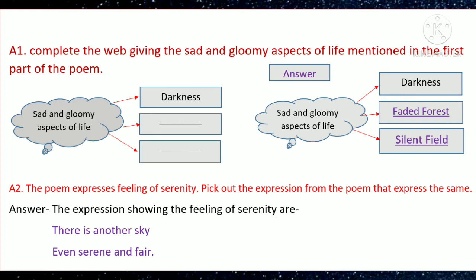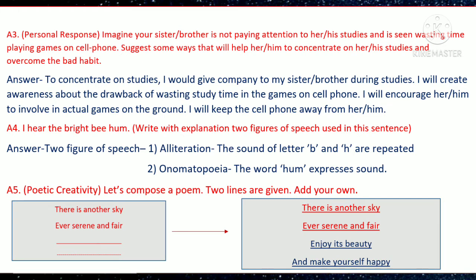Question A2: The poem expresses a feeling of serenity. Pick out the expressions from the poem that express the same. The expressions showing the feeling of serenity are: first, 'there is another sky,' and second, 'ever serenity and fair.'